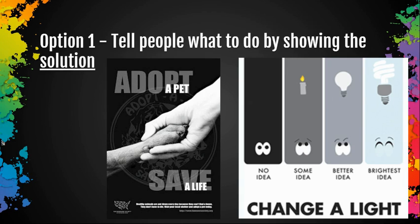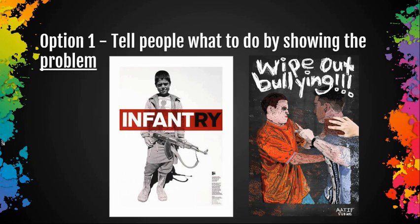When you start to turn these ideas into images, there are a few options for how you can approach it. The best option is to tell people what to do by showing the solution. On the left side, 'Adopt a Pet, Save a Life' — the person is holding the dog's paw because they are adopting the dog and saving them from being euthanized in a shelter. On the right, 'Change a Light' promotes using CFL bulbs as the most efficient way to produce light — you're showing the solution to a problem.